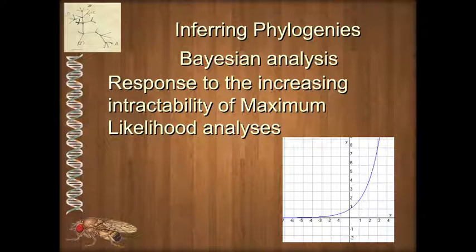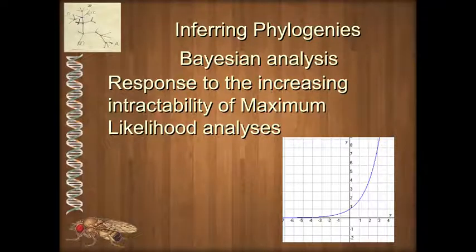So people began looking for a method that could implement a model of evolution and use statistical tests to determine whether a phylogeny is better than an average phylogeny or a specific other hypothesis — but do it in a reasonable amount of time, particularly as our data sets are getting bigger and we're able to gather lots of genetic data. Bayesian analysis was largely an answer to that.